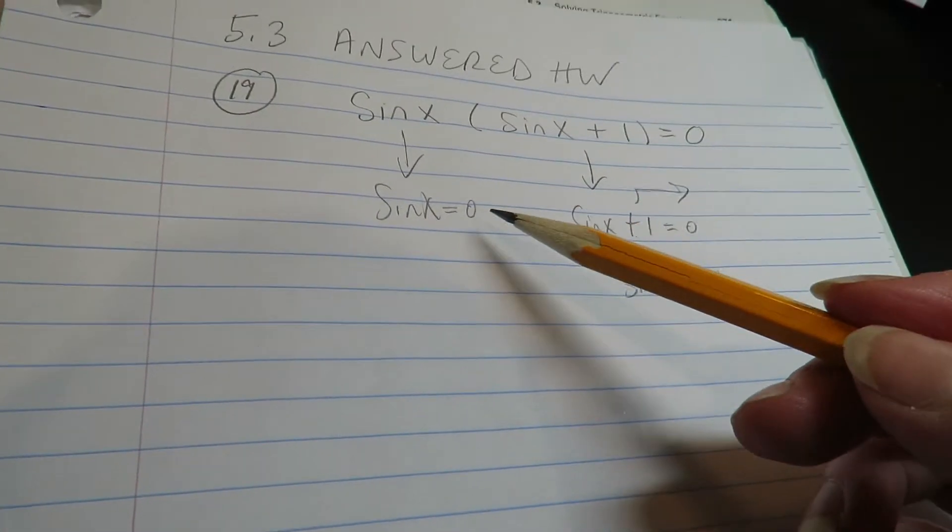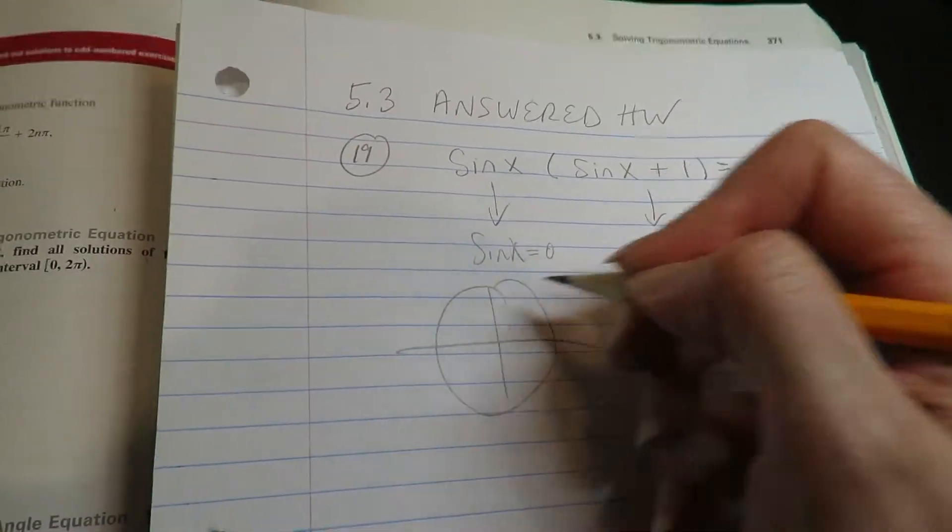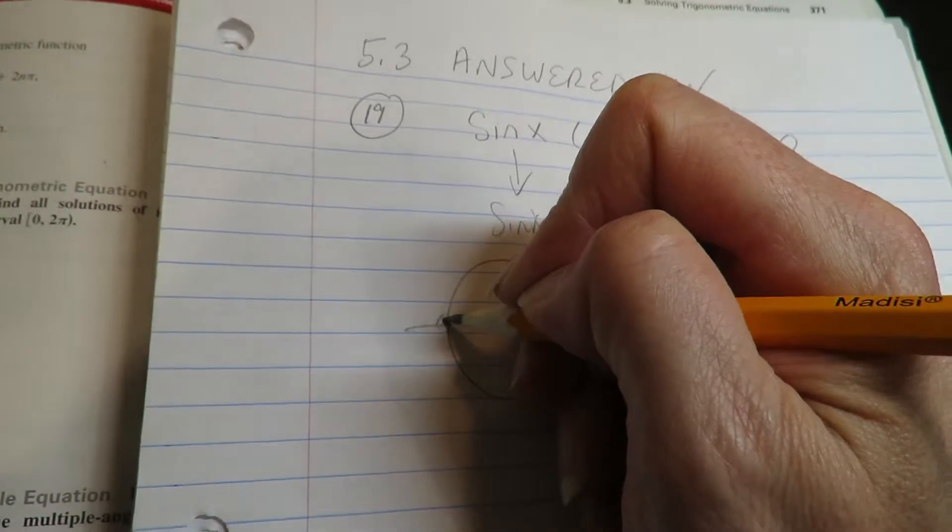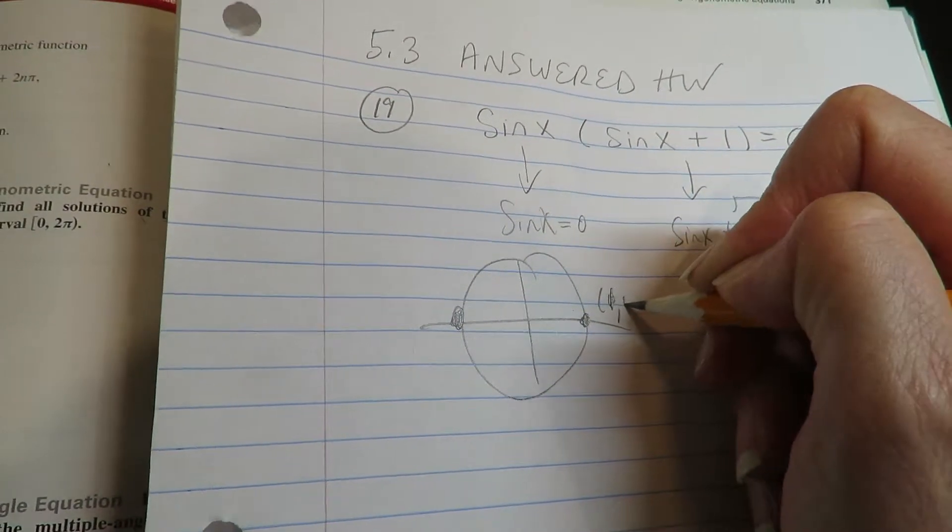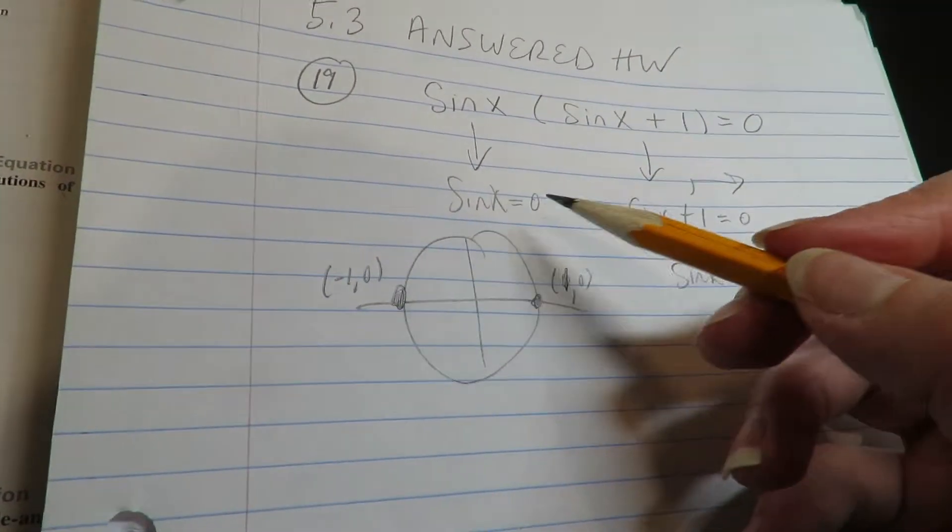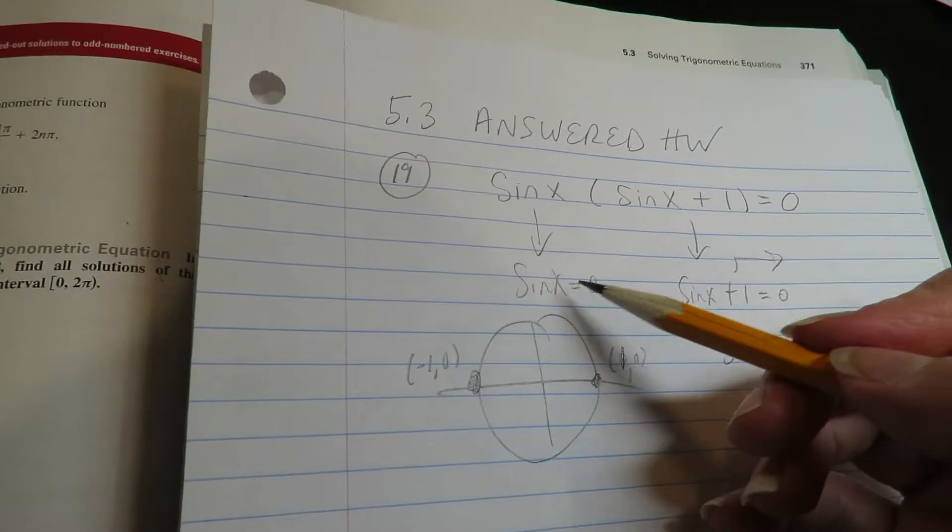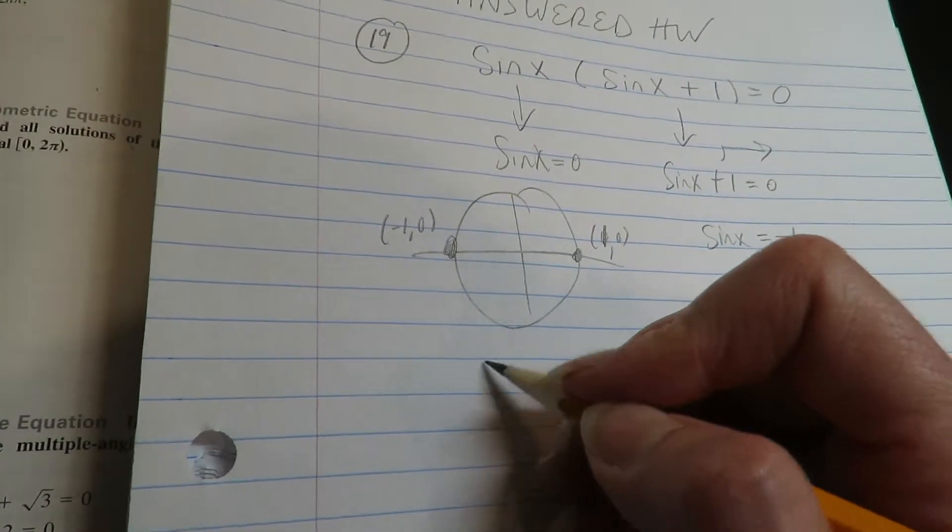Now, if the sine equals zero or negative one, that's the unit circle. So on the unit circle, the sine would be zero at an angle of zero or an angle of pi on the unit circle. Because sine is the second value. So the answers for this one, if I first write them separately, would be